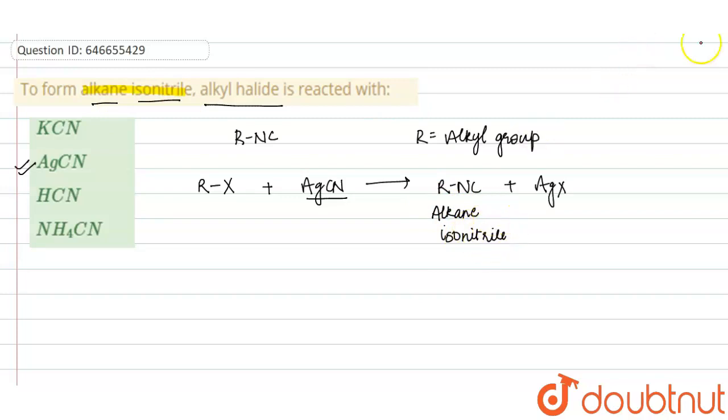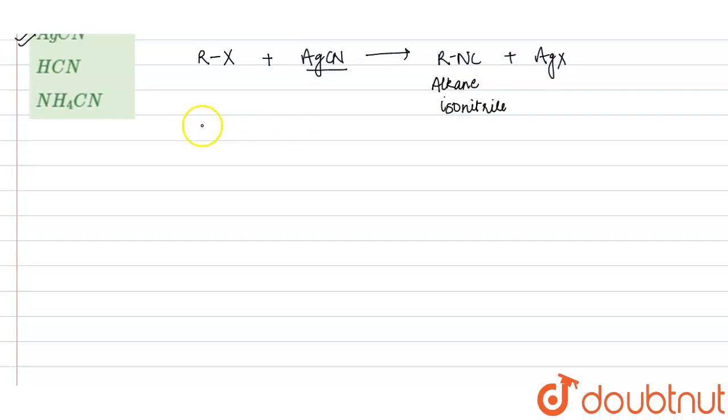Now let's see the reason behind it. Actually, AgCN, the structure of AgCN is like this, and it is a covalent compound.